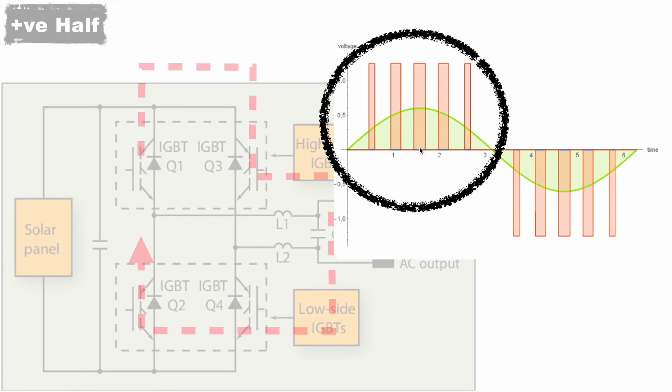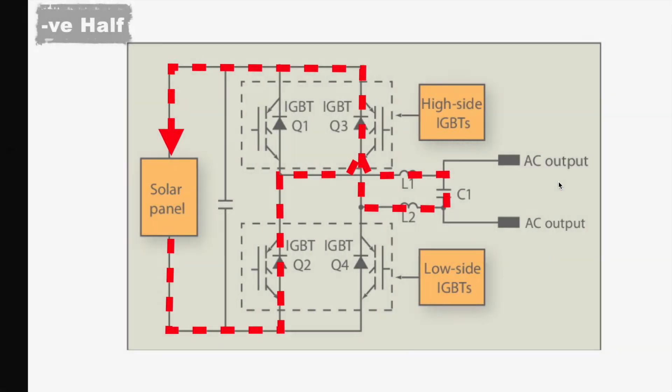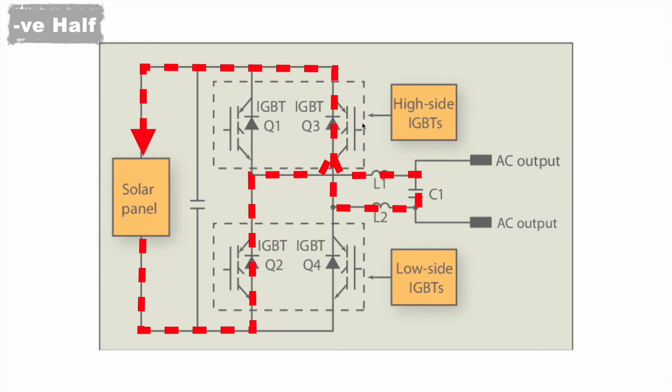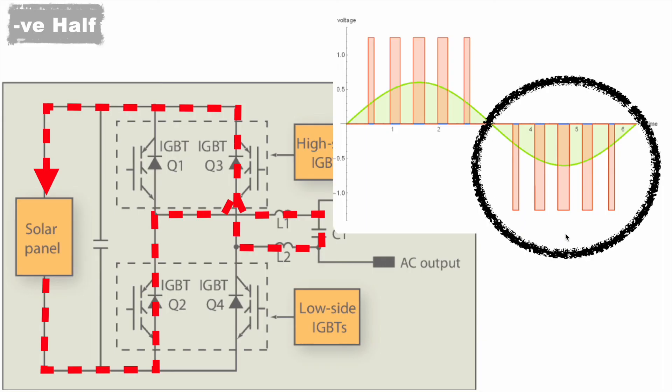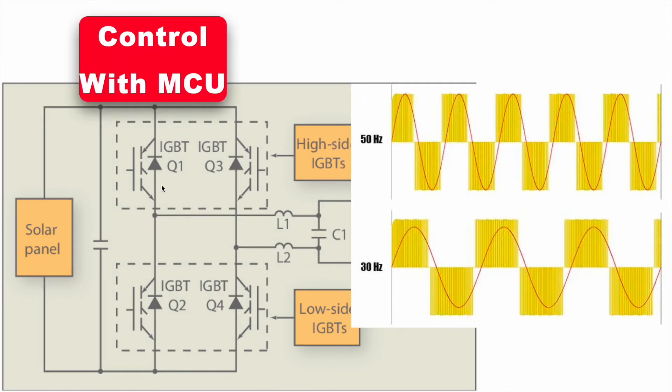And for this negative half, we need to just turn off the Q1 and Q4 and start controlling Q2 and Q3. Its path will be like this, and we can achieve the negative half of the AC. As a summary, the time period for which we are controlling Q1 and Q4 will decide the positive half cycle, and the time period for which we are controlling Q2 and Q3 will decide the negative half of the cycle.